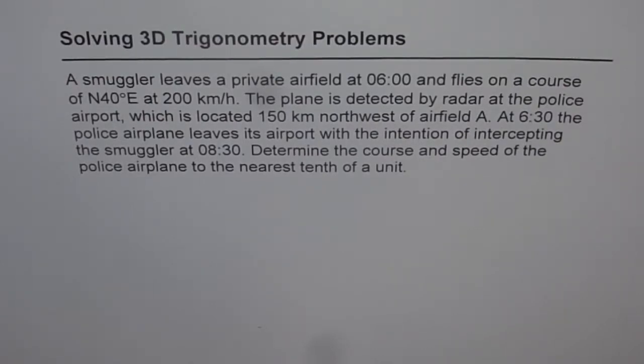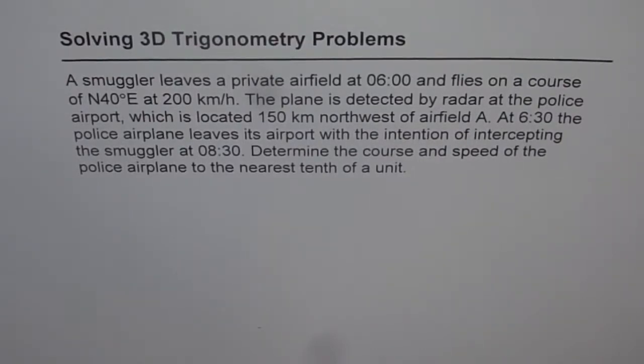Here is a very interesting question which has been seen so many times in the test papers. Now let's see how to solve it. A smuggler leaves a private airfield at 0600 hours and flies on a course of north 40 degrees east at 200 kilometers per hour. The plane is detected by radar at the police airport which is located 150 kilometers northwest of airfield A. At 0630 the police airplane leaves its airport with the intention of intercepting the smugglers at 0830. Determine the course and speed of the police airplane to the nearest tenth of a unit.